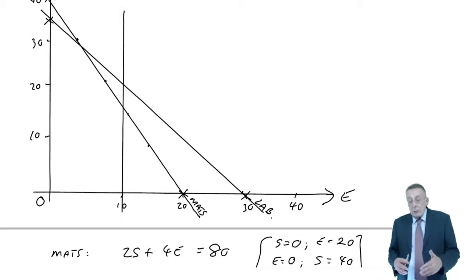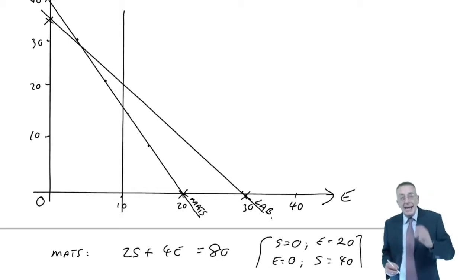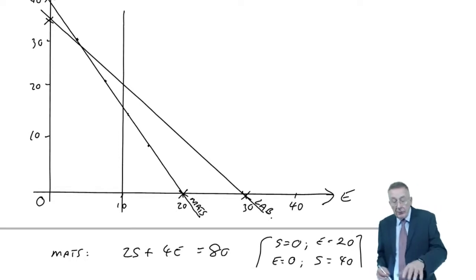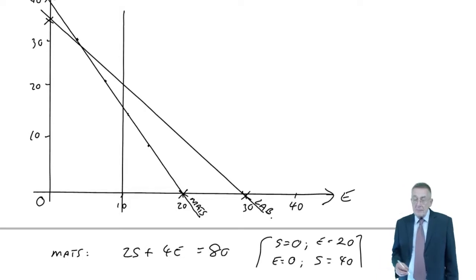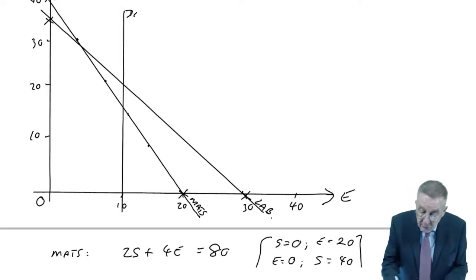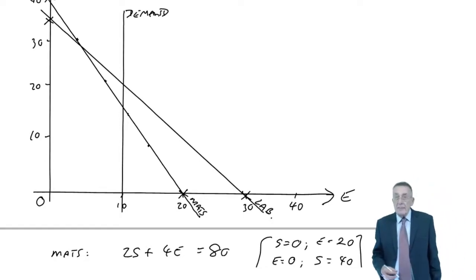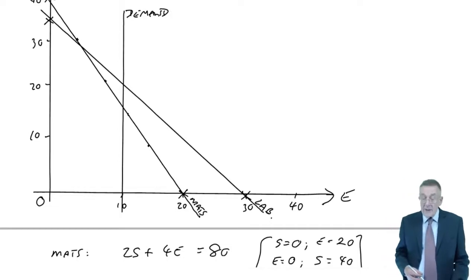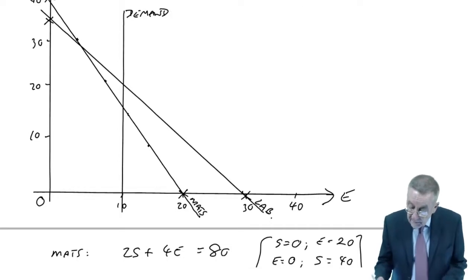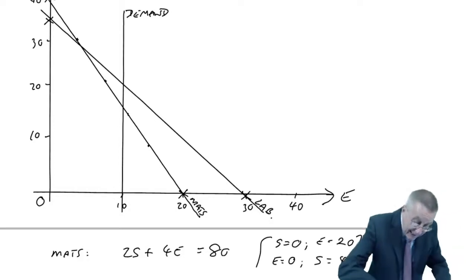And what can we interpret from that? Surely any answer we end up with must satisfy all three of those restrictions. So we can't be above the labour line. We can't be above the materials line. We can't be to the right of the demand line. And surely to satisfy all of them at the same time, we must be in this area that I'm colouring in in red.